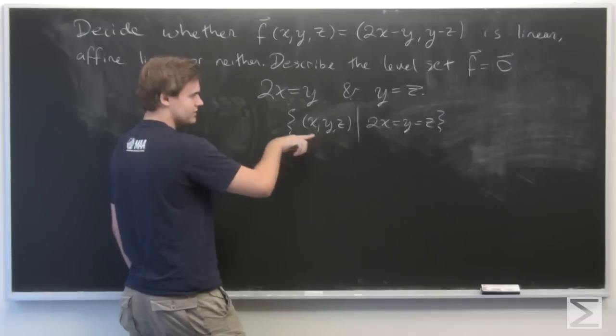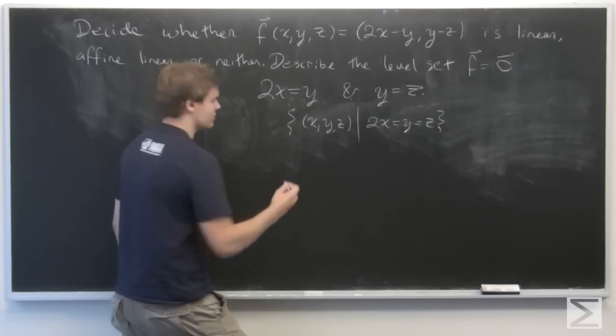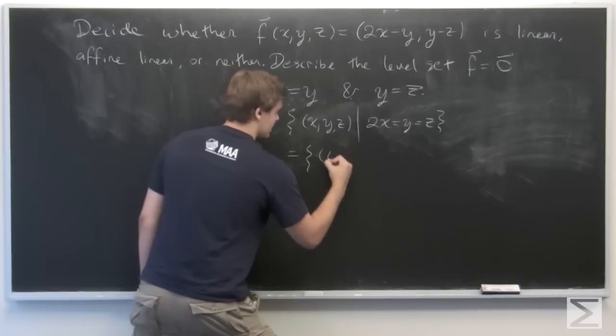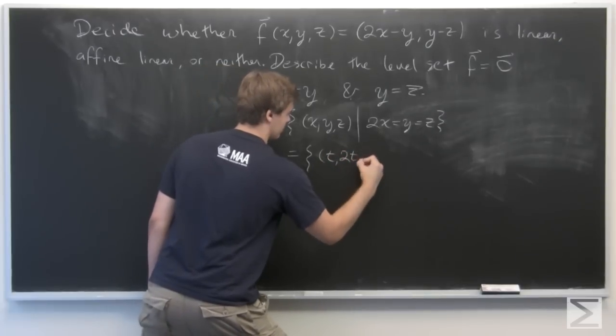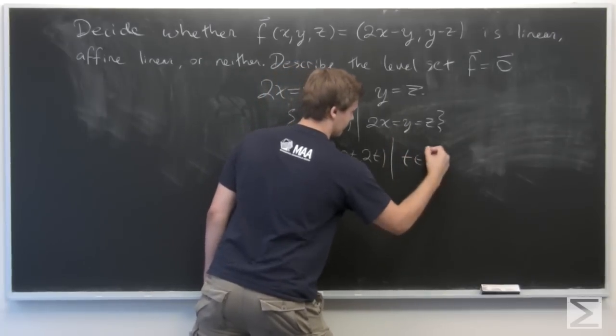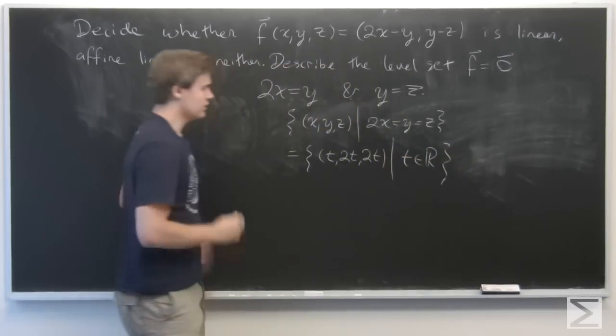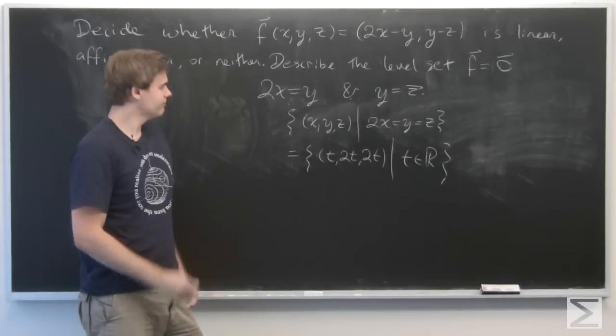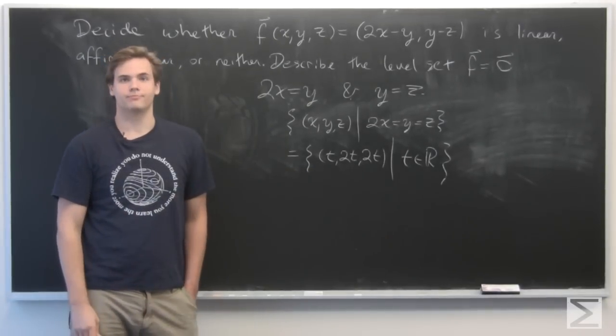And we can replace these three variables with one variable, actually. And this is just going to be equal to the set of points t, 2t, 2t, where t is a real number. So, this is a line through the origin in R^3. And, that's it.